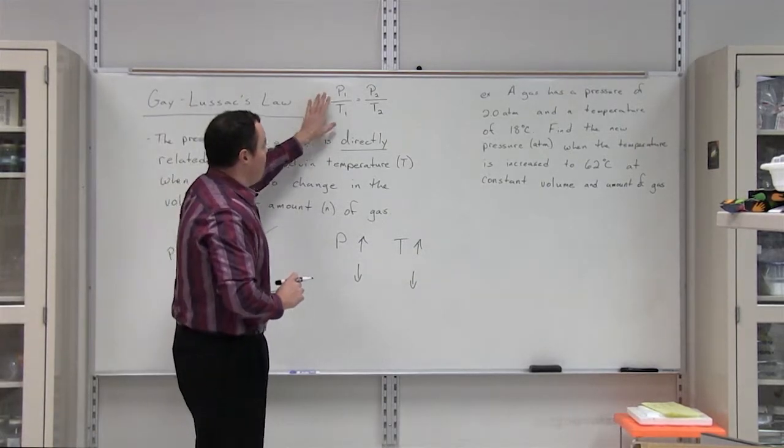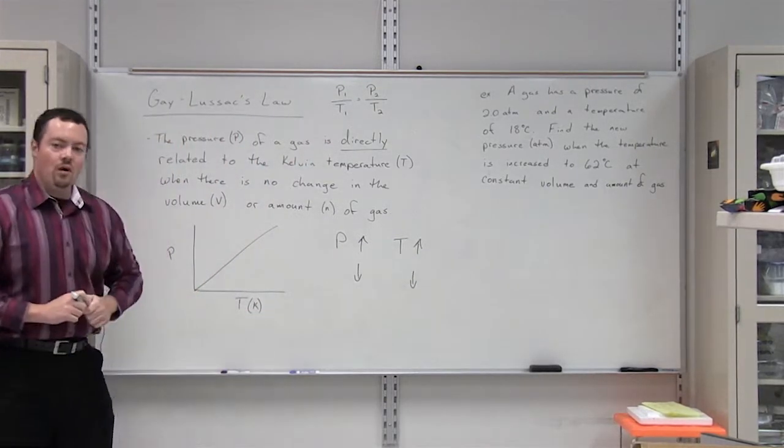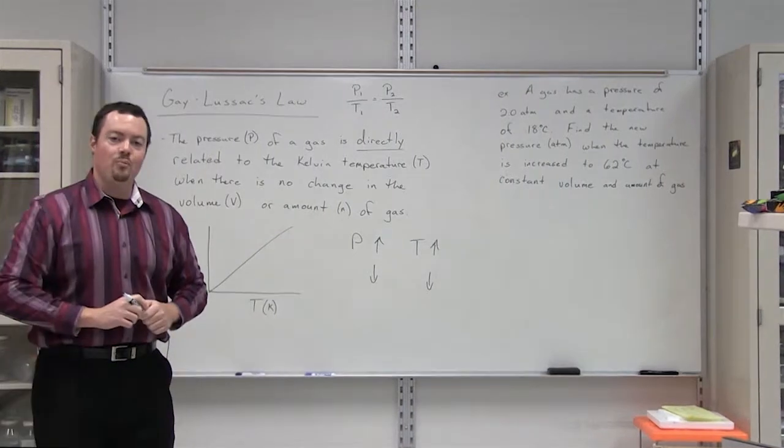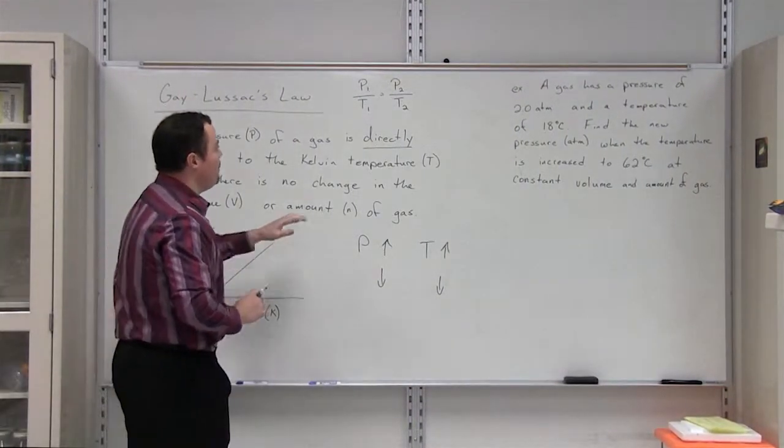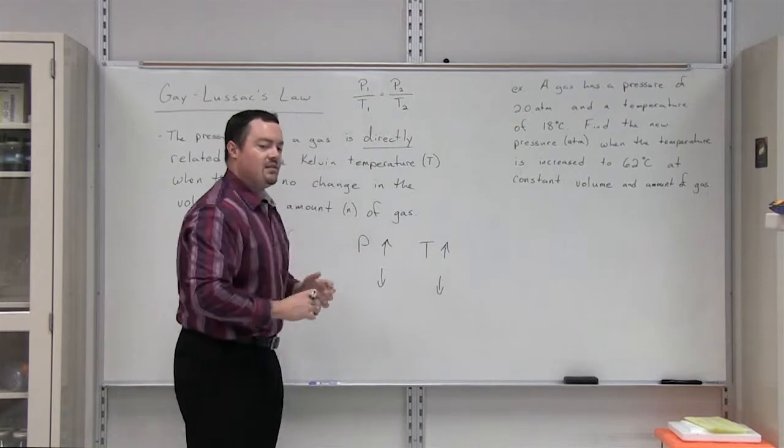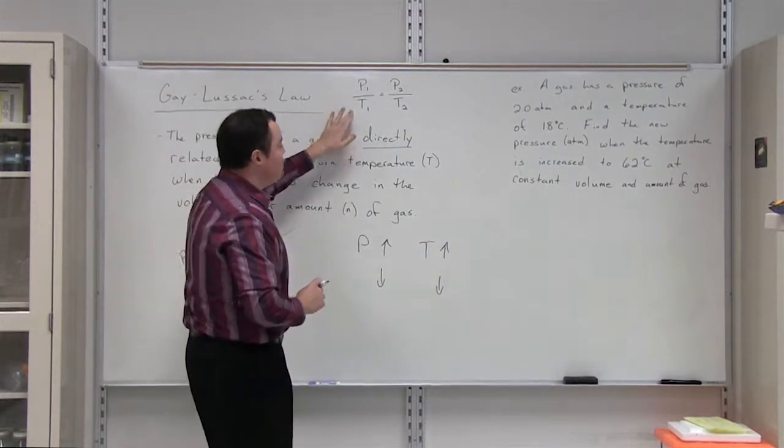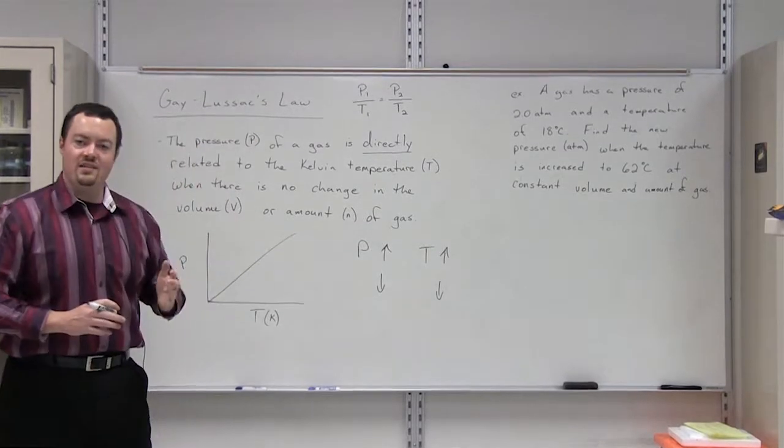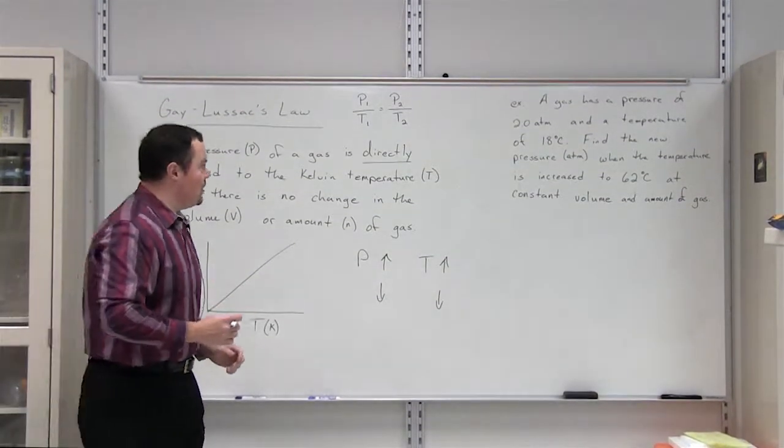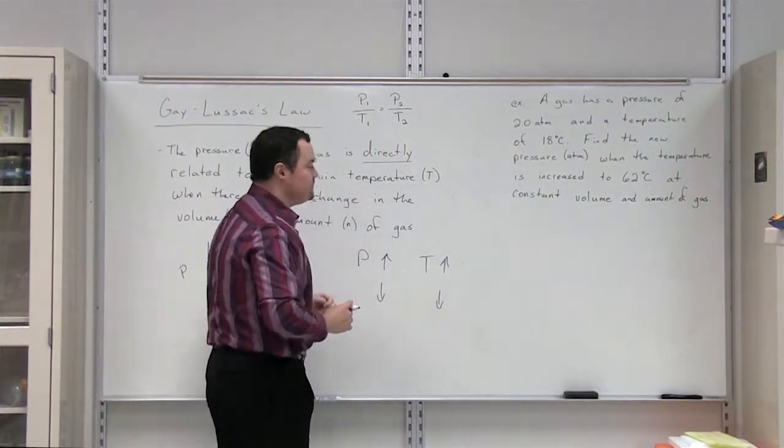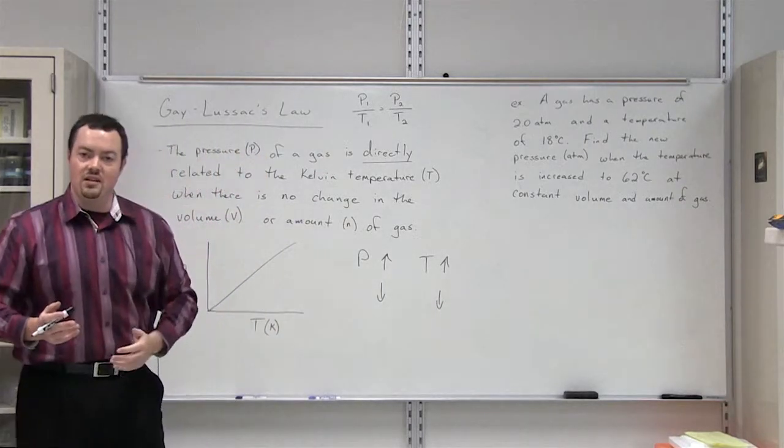The formula for Gay-Lussac's law is P1 over T1 is equal to P2 over T2. What we mean by this is the same gas under two separate conditions. So P1 and T1 indicate the gas under condition number one. P2 and T2 are the gas under condition number two.